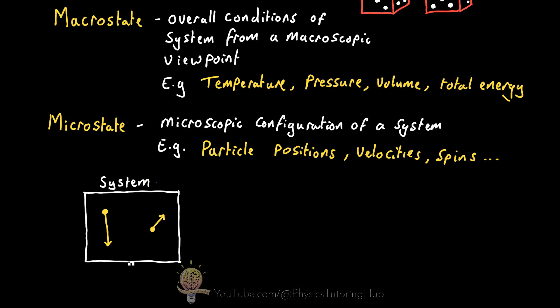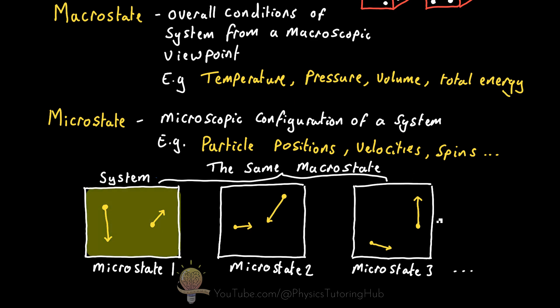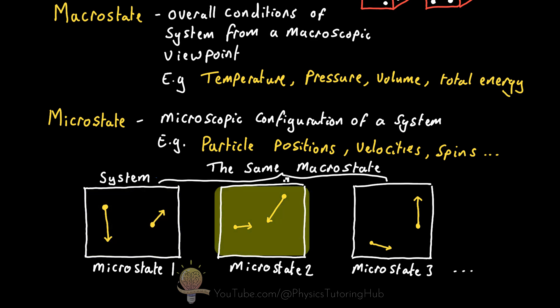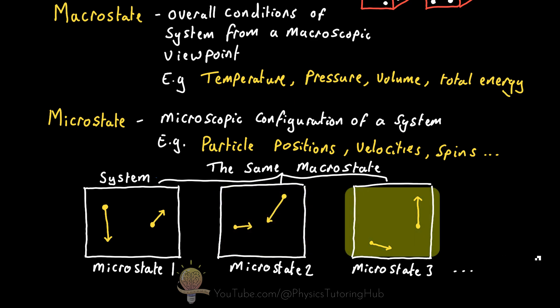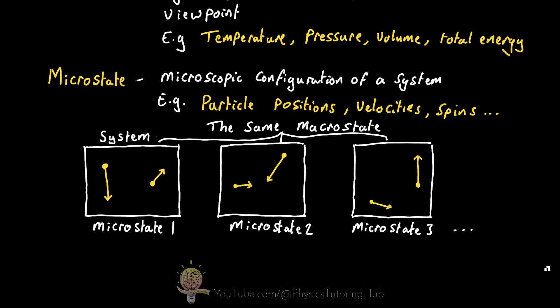But we can also measure the microstate of this system. For example, the positions of the particles in this box, their current velocities and so on. In fact, we can have many different microstates or different configurations of particles all with the same macrostate. So we could have a configuration like this or maybe like this or even like this. So long as the pressure, temperature, volume, and total energy do not change between these microstates, they all belong to the same macrostate.